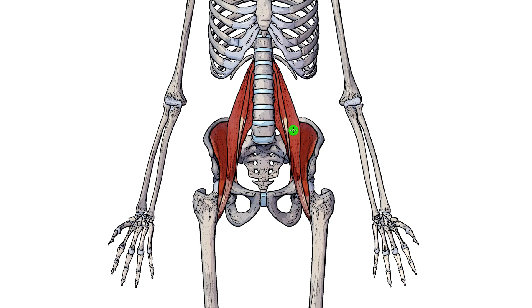The psoas major is more superficial than the iliacus, meaning the psoas major is closer to the skin surface. As the psoas major comes down, it merges together with the fibres of the iliacus muscle. As they merge together, they both form a common tendon, and this common tendon is what connects onto the lesser trochanter of the femur.